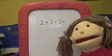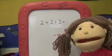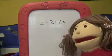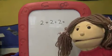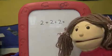To work out 2 plus 2 plus 2, I just need to count them up or add them together. 2 add 2 add 2 is 2, 4, 6.